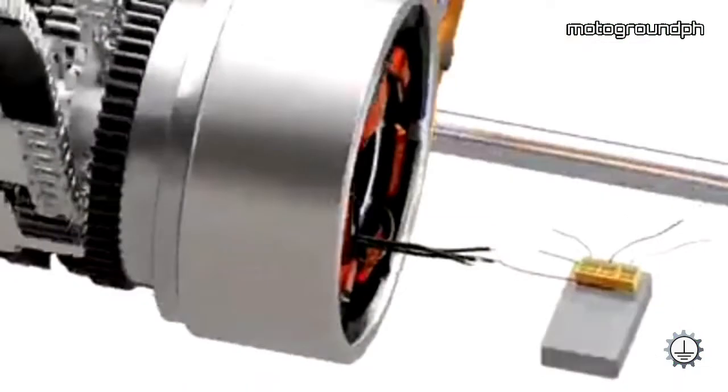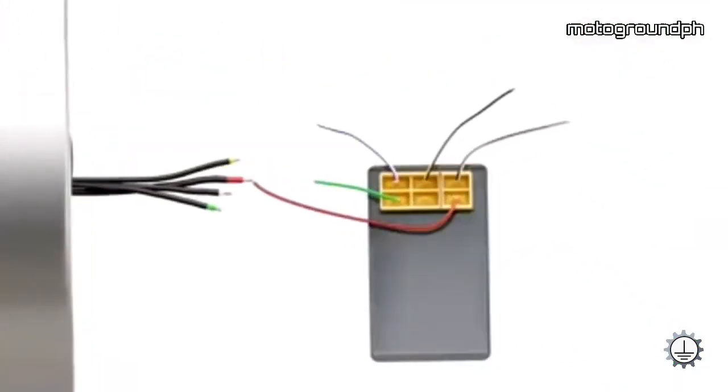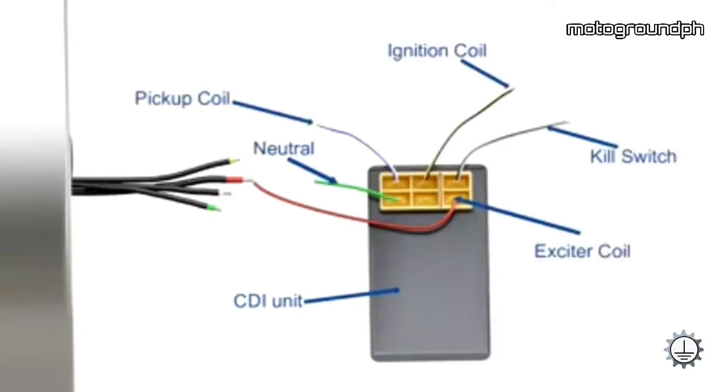This voltage is supplied to an electrical component known as the capacitive discharge ignition, or CDI unit. The connection for an AC-CDI is shown here. The primary function of the CDI unit is to store electric charge and dump the stored charge when required. A capacitor inside the CDI unit stores the electric charge.